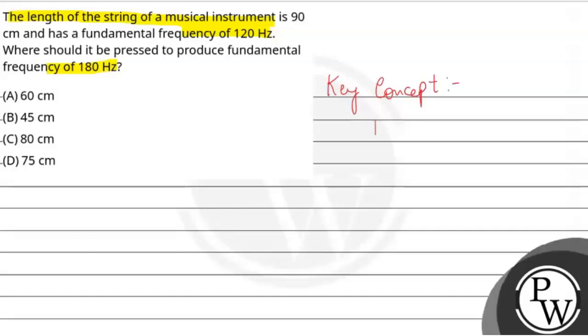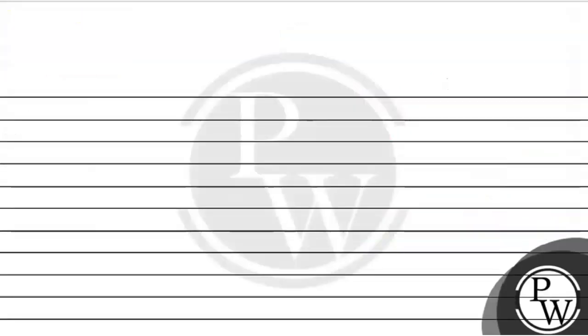Fundamental frequency f1 is given as 120 hertz, f2 is given as 180 hertz. Now we have to calculate l2, where we press so that our frequency is 180 hertz.